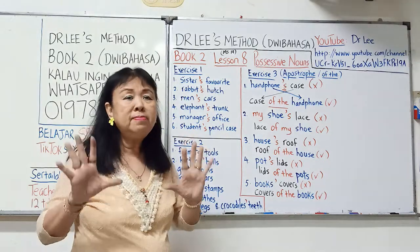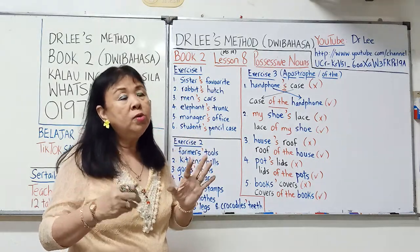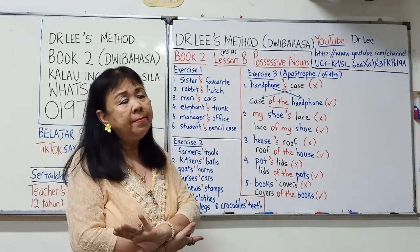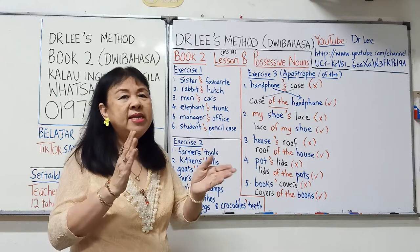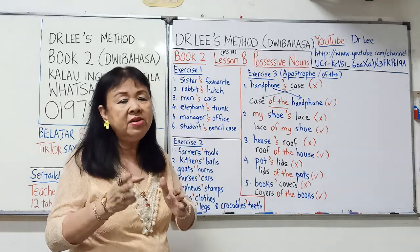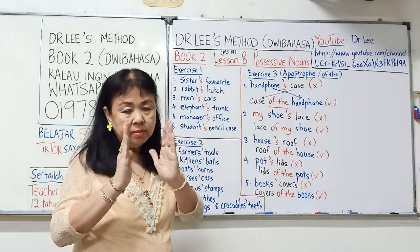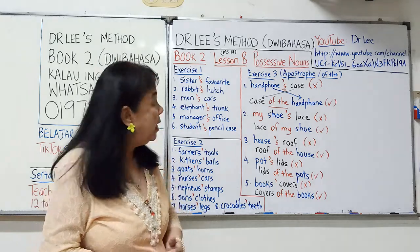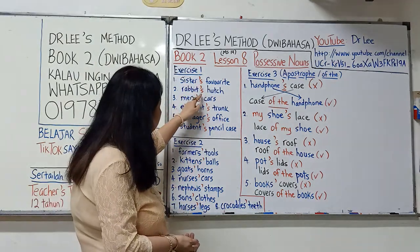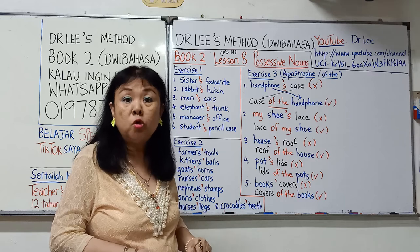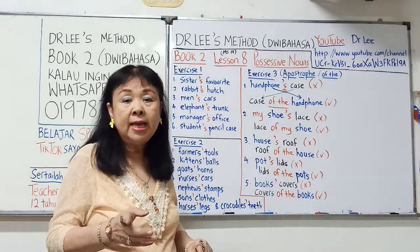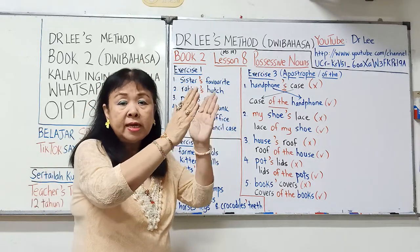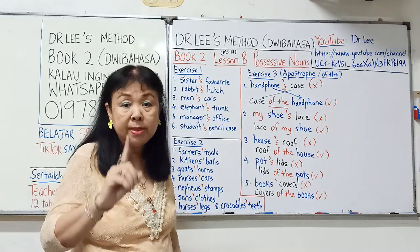Sekarang kita terus ke bab ke-8, possessive noun iaitu kepunyaan. Waktu kita ingin memberi tahu kepunyaan, contohnya Ali punya back — dalam bahasa Inggeris ia menjadi 'Ali's back'. Jadi saya ikut susunannya: Ali punya back, senang untuk kamu memahami. Di sini kita boleh lihat apostrophe S. Kalau kita tulis apostrophe S, maksudnya binatang atau orang di depan itu singular, iaitu satu.